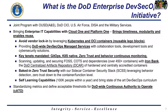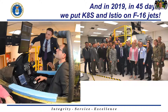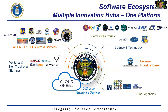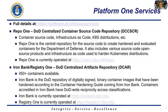In 2019, we talked about how we built simulators, and then in 45 days we put Kubernetes and Istio on F-16 jets. We created Platform One to become that central team helping all DoD programs, science and technology partners, contractors, startups, non-traditional venture groups, and other agencies. That turned into a broad software ecosystem all over the United States with teams focused on different missions — from space to nuclear systems, jets, bombers, business systems, to cyber offense and defense.